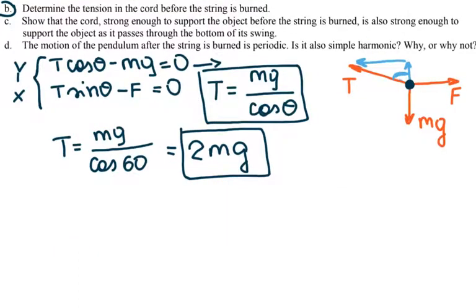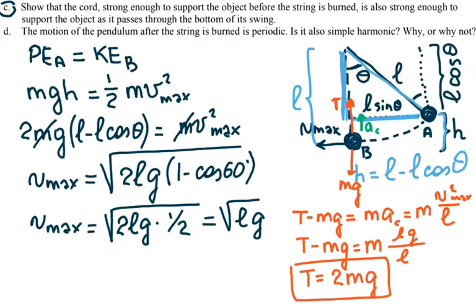And the tension used to be equal to 2mg, which proves that the cord should be able to handle the mass at its lowest position as it passes through the bottom of the swing.